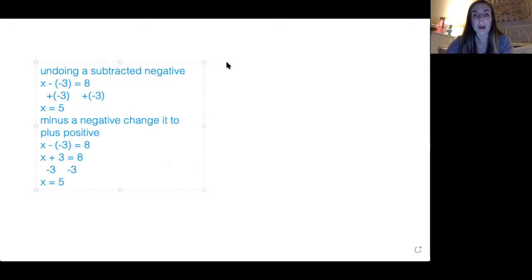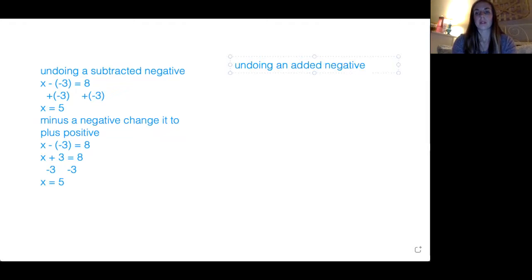Now we're going to talk about undoing an added negative. Okay. The example they give us is X plus negative five equals seven. Okay. So method one, we're going to stick with the regular method. So we're adding here. We need to do the opposite to undo that, which means we need to subtract. So we're going to do subtracting negative five.